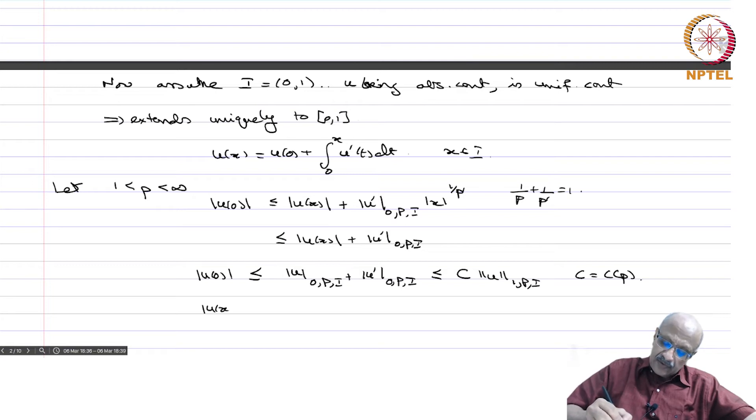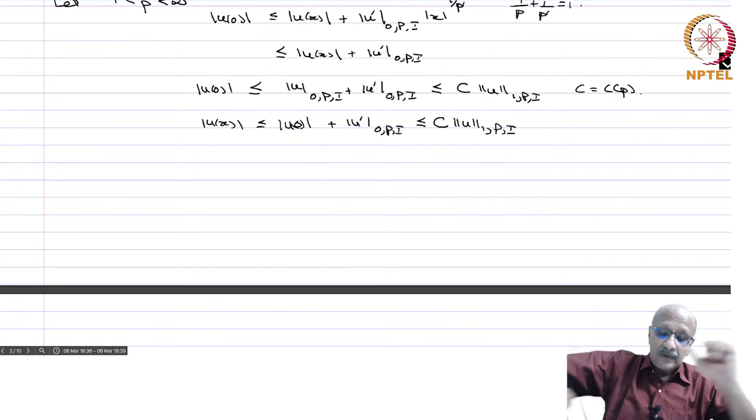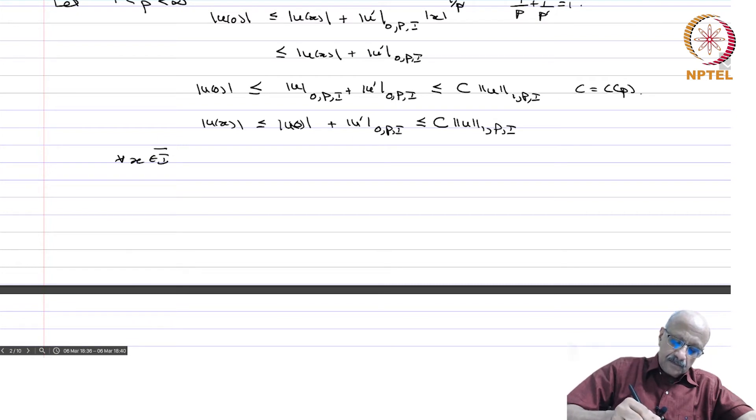Again, you have |u(x)| is less than or equal to |u(0)| plus |u'|_{L^p(I)}, and therefore that is again less than or equal to c times ||u||_{W^{1,p}(I)}. This c may be, whenever I write c in various inequalities, they are not necessarily the same real number but some generic constant. It is independent of the variables which we have. For all x in I̅.